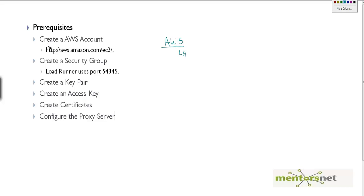The first thing is that we need to fulfill all the prerequisites mentioned here. Some of these prerequisites are optional, so let's go through them. The first prerequisite is to create an AWS account — we must have an AWS account. Then you create a security group after you have an AWS account.